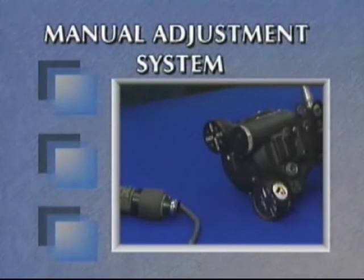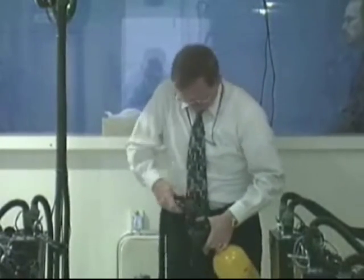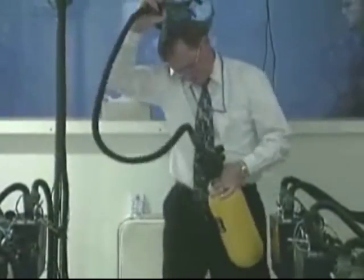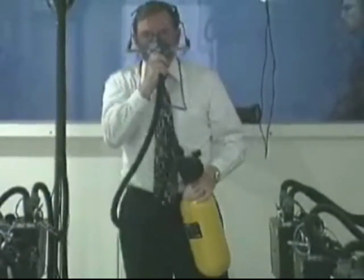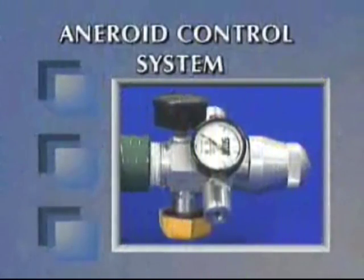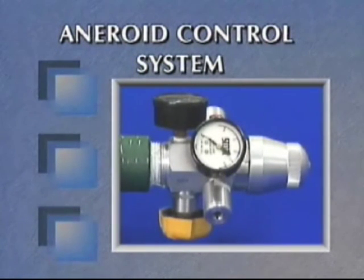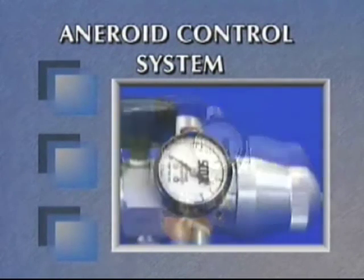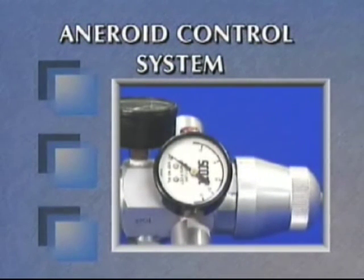The second type of continuous flow regulator incorporates a manual adjustment knob, allowing the user to increase or decrease the oxygen flow rate corresponding to aircraft cabin altitude or physical exertion, ensuring proper blood oxygen saturation and efficient use of the oxygen supply. The third type uses an aneroid control to automatically increase or decrease the oxygen flow rate corresponding only to the aircraft cabin altitude.